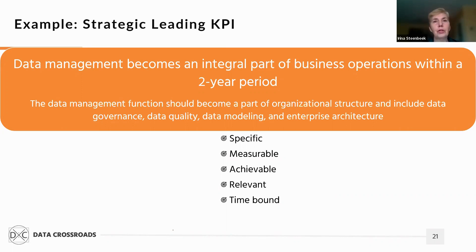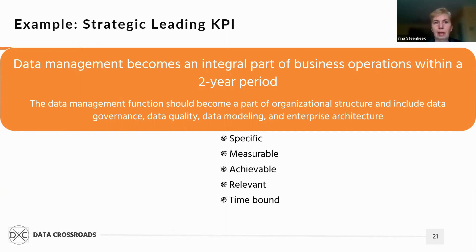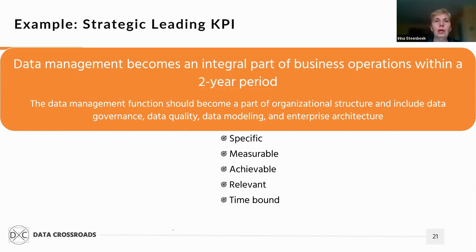Data management becomes an integral part of business operation within two years. The function should become a part of the organizational structure and include data governance, data quality, data modeling, and enterprise architecture. The Orange data management framework recommends that a KPI meet the SMART requirement — an abbreviation for Specific, Measurable, Achievable, Relevant, and Time-bound. You can see it on the bottom of the slide.